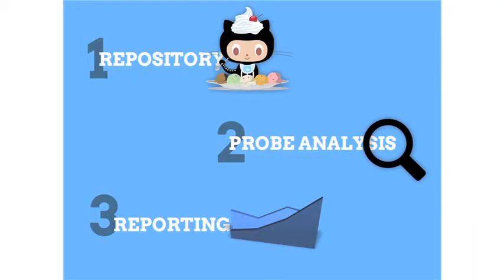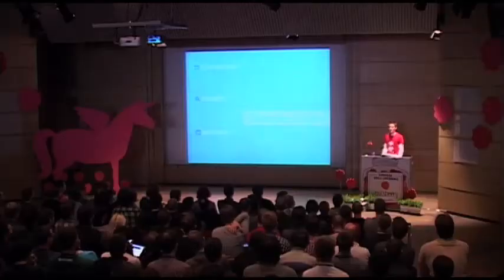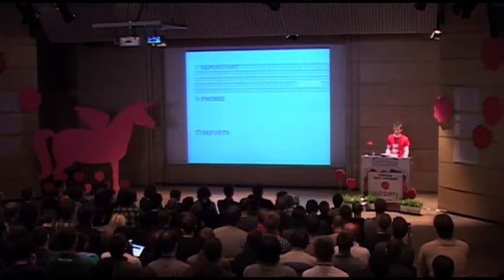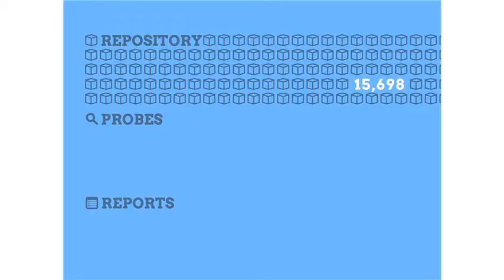Two: probe analysis. A probe is just a definition in my project — a bunch of different files where we just run tests against your code. And then we run a report on it, using fancy graphics and stuff. Repository, probes, reports. The difference is that we do this a whole bunch of different times. Right now, over just the last week or so, I've run it against 15,000 repositories, which may seem like a lot. It's really not — it's really tiny.